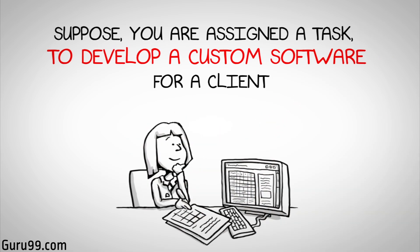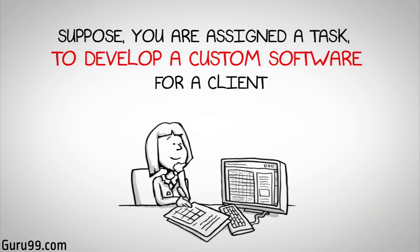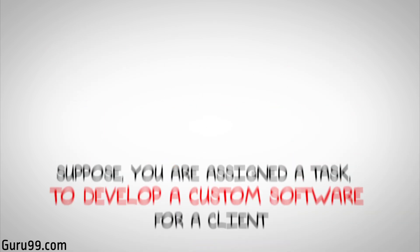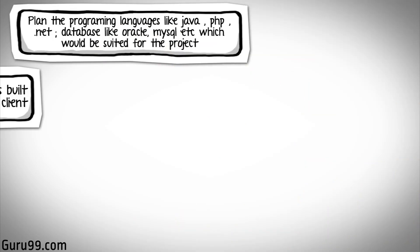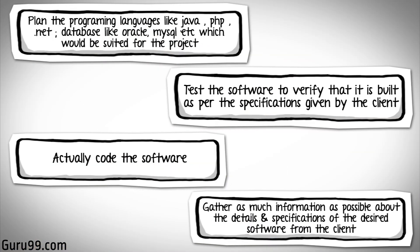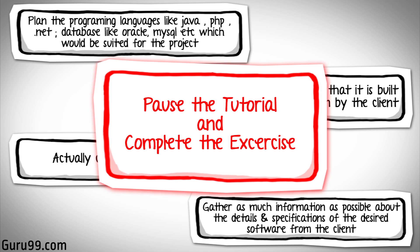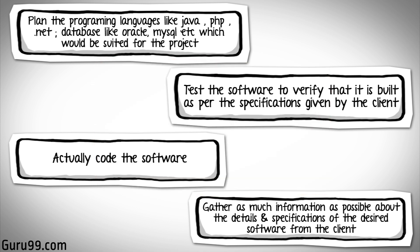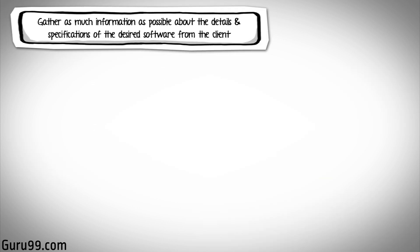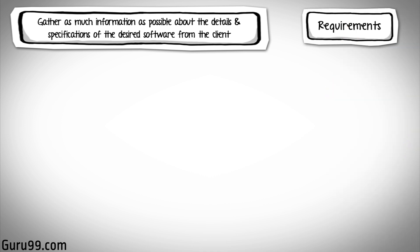Suppose you are assigned a task to develop a custom software for a client. Each block below represents a step required to develop the software. Irrespective of your technical background, try and make an educated guess about the sequence of steps you will follow to achieve the task. The correct sequence would be: gather as much information as possible about the details and specifications of the desired software from the client. This is nothing but the requirements gathering stage.